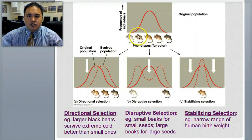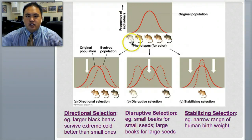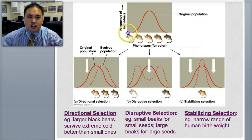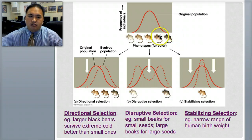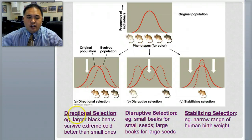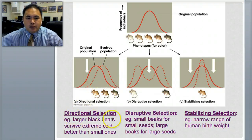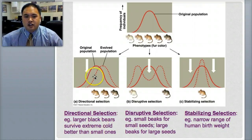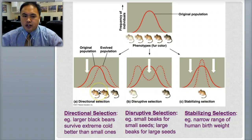The first is directional selection. Here's an example: here's the original population and frequency of individuals. Let's say we're studying a population of mice with different fur colors from dark to white. If you take a census of all the mice, very few are white, very many are brown, and very few are dark — this is a bell curve. If this population shifts towards a direction, like all turning more black or more white, that's called directional. Another example: if larger black bears survive extreme cold better than small black bears, they're shifting towards larger size — that's directional.